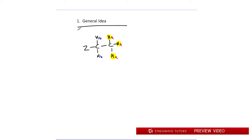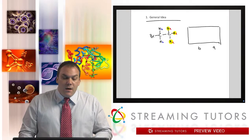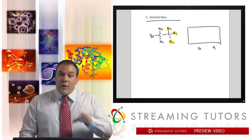If Z is something electronegative — let's say a bromine — then when I look at my chart, the A's are going to be further to the right and the B's are going to be further to the left. We're not looking at specific numbers, just relative positions.